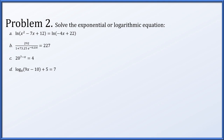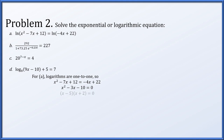Problem two has four separate exponential or logarithmic equations to solve. Part a: one logarithm equals another of the same base; since logarithms are one-to-one we set the arguments equal. So x squared minus 7x plus 12 must equal negative 4x plus 22. Adding 4x and subtracting 22 from both sides gives a quadratic equal to zero, which factors as (x minus 5)(x plus 2) equals zero, so x equals 5 or x equals negative 2.